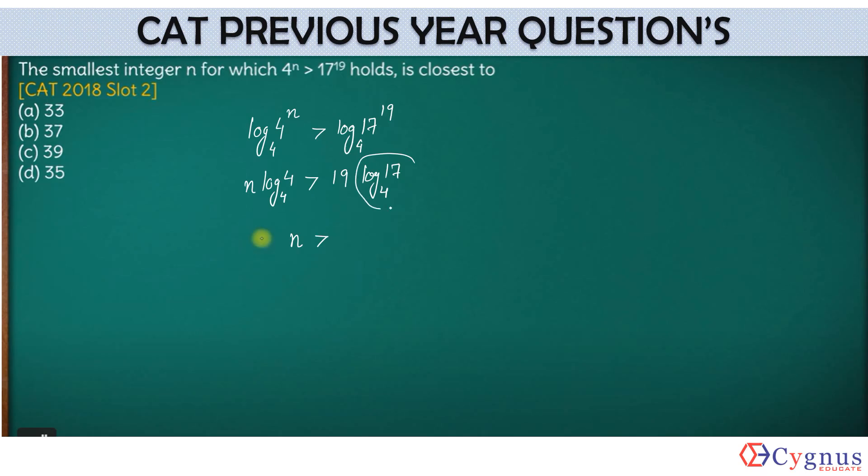Now let's talk about this part, log₄(17). Had it been 16, log₄(16) would be equal to how much? Log of 4 squared. This will become 2, so your answer will become 2 here.